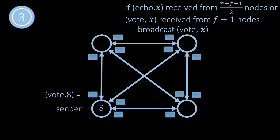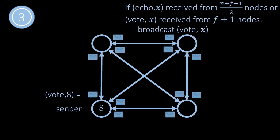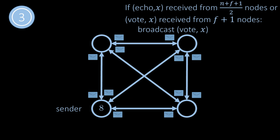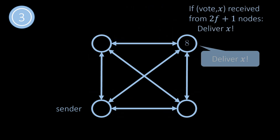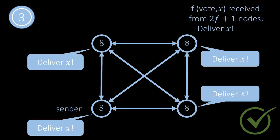In the example here, there are four nodes and at most one failure can be tolerated because the total number of faults must be strictly less than a third of the number of nodes. So (n + f + 1) / 2 is 3. Note that a node further sends a vote message if it has received at least f + 1 vote messages for the same value, so all nodes exchange vote messages in the example. Lastly, if a node receives at least 2f + 1 vote messages for some value, then the node delivers that value and terminates. In the example here, all nodes deliver value 8 in the end.